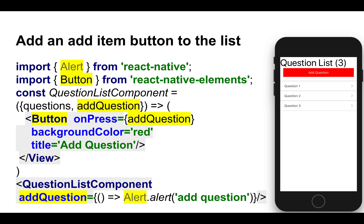What we can do is take the list component as a stateless component. Notice that it's not maintaining any state. Instead, it's receiving as an argument a function — add question — that the button can invoke. We're passing it as a lambda, and we're just alerting to verify that there's a connection between what we're passing and the event received outside of the component.